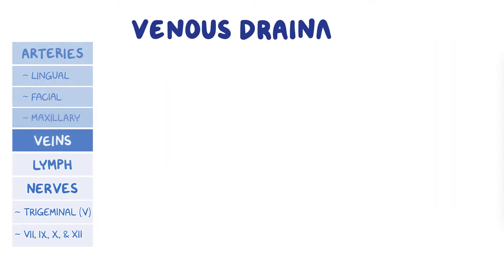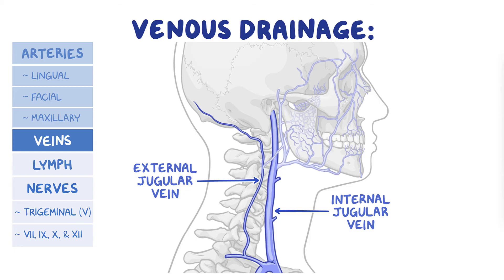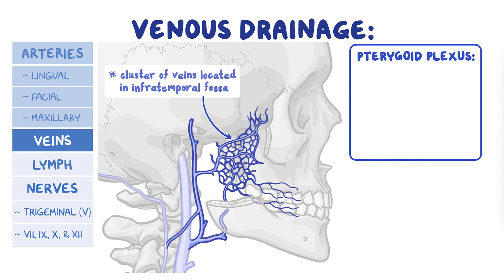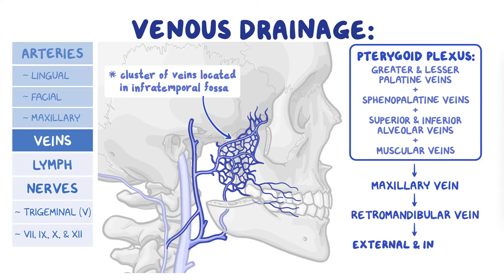Moving on, the veins of the oral cavity accompany the arteries of the same name and eventually drain into the internal and external jugular veins. Some of the veins, though, take a slight detour and join into the pterygoid plexus, which is a cluster of veins located in the skull's infratemporal fossa. These include the greater and lesser palatine veins, and the sphenopalatine veins from the palate, the superior and inferior alveolar veins from the teeth and gingiva, and veins from the muscles of mastication. Eventually, the pterygoid plexus veins converge to form the maxillary vein, which drains via the branches of the retromandibular vein into the external and internal jugular veins.